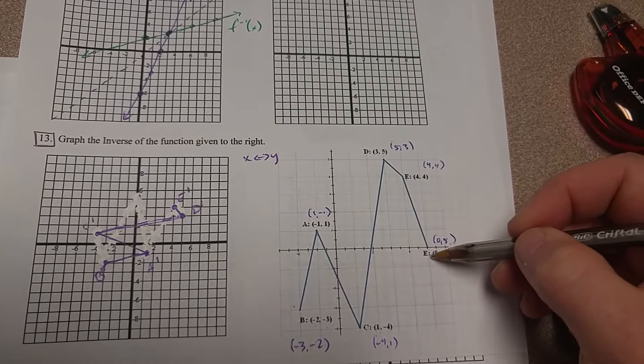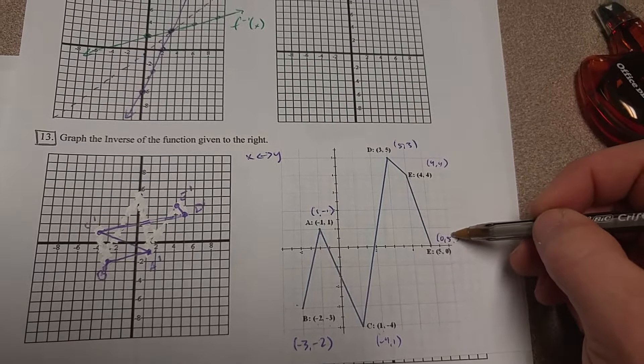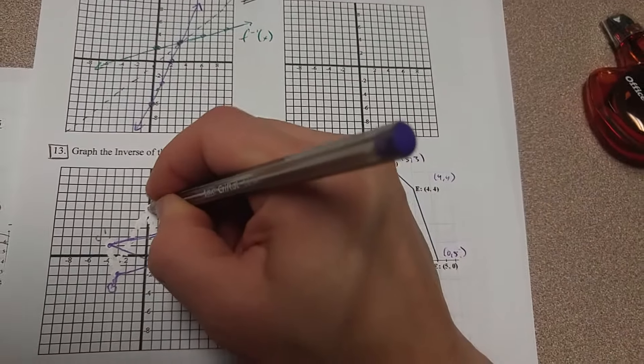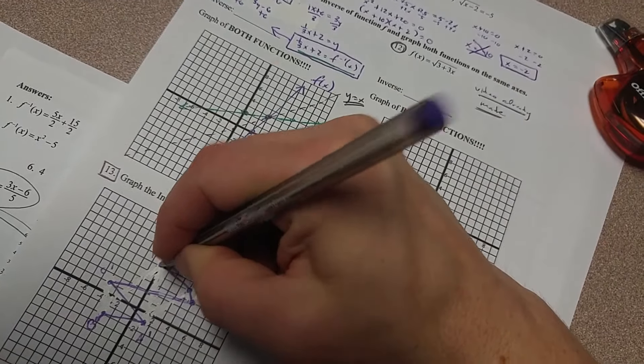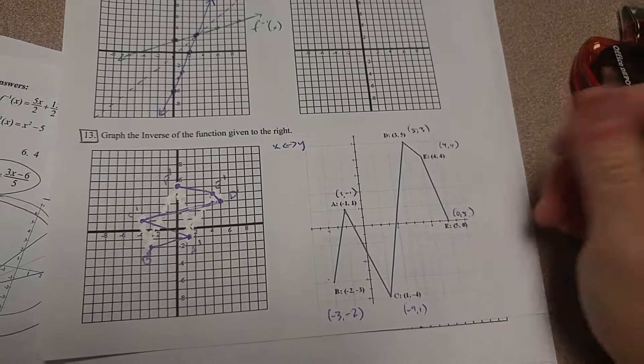And then finally, if you switch 5 and 0, you get 0, 5. So 0, 5 is here, and that is F prime. And it is going to connect with E prime. There you go.